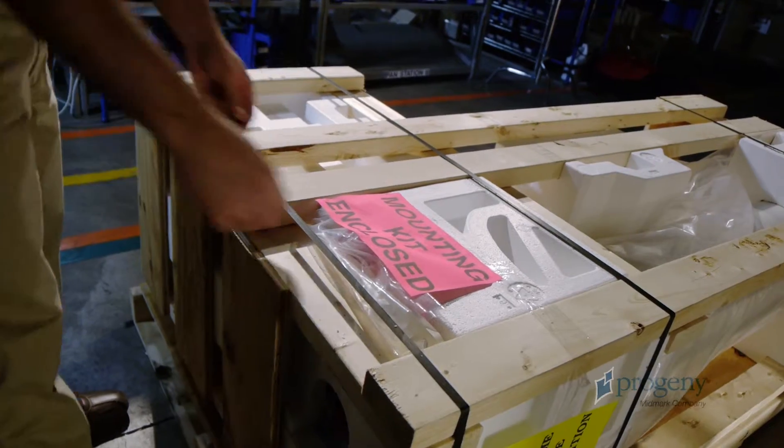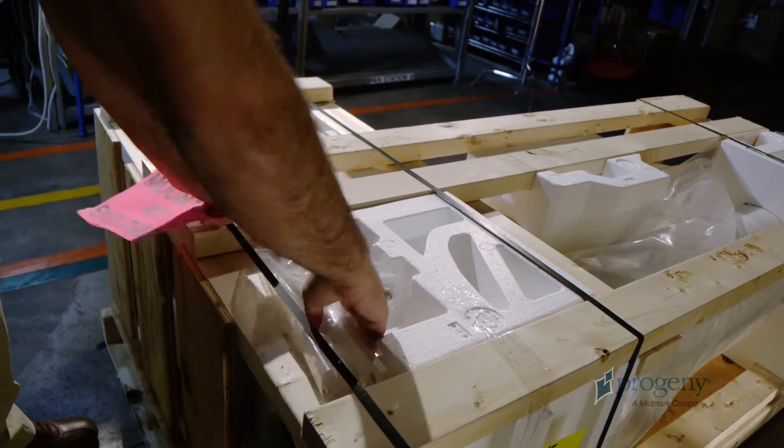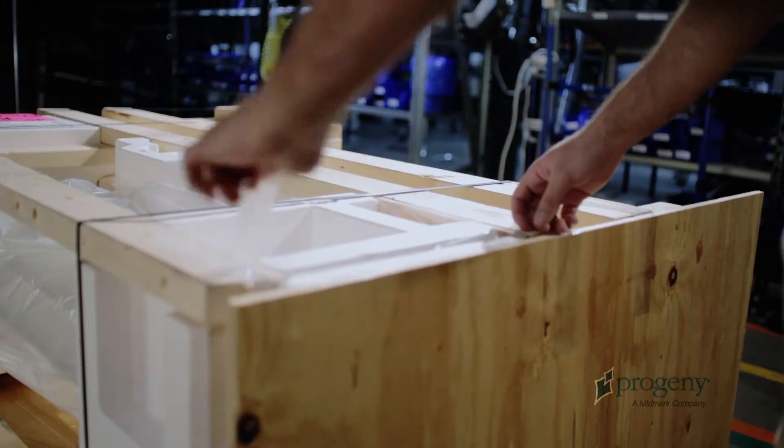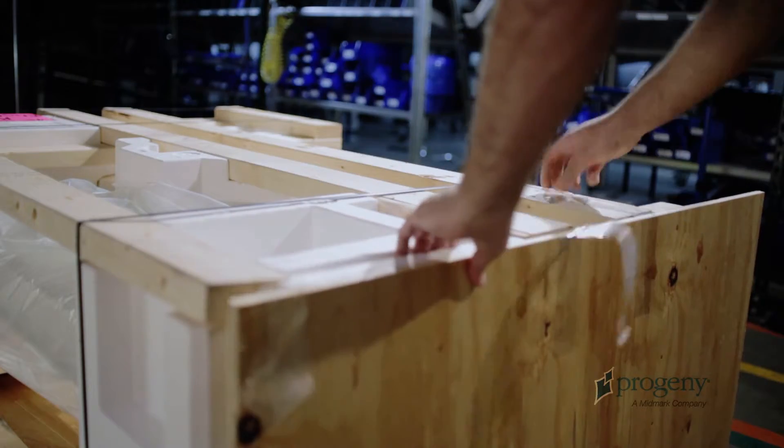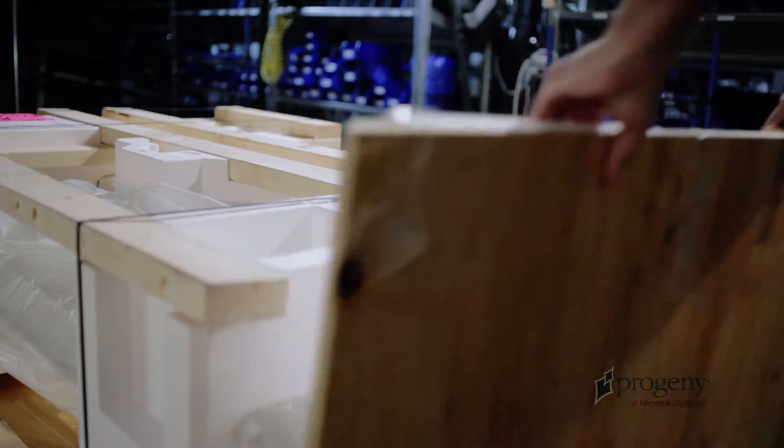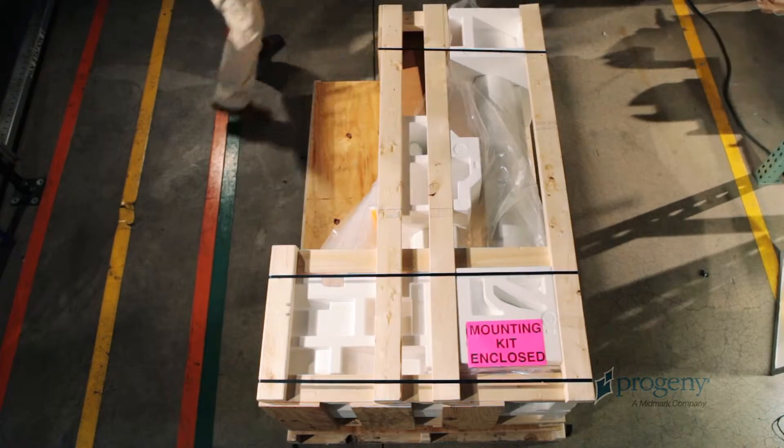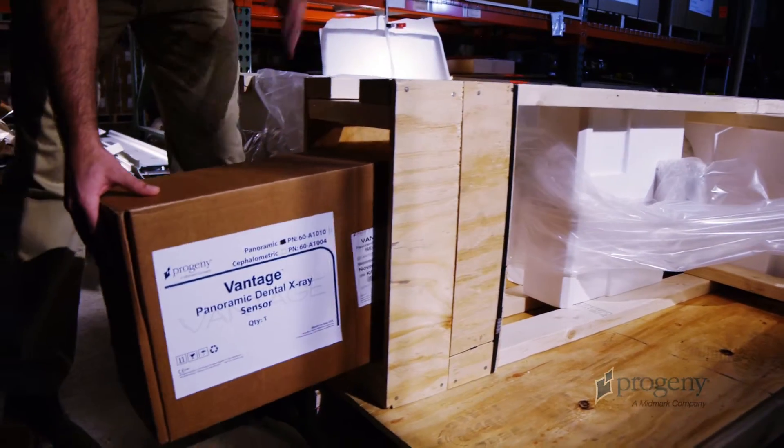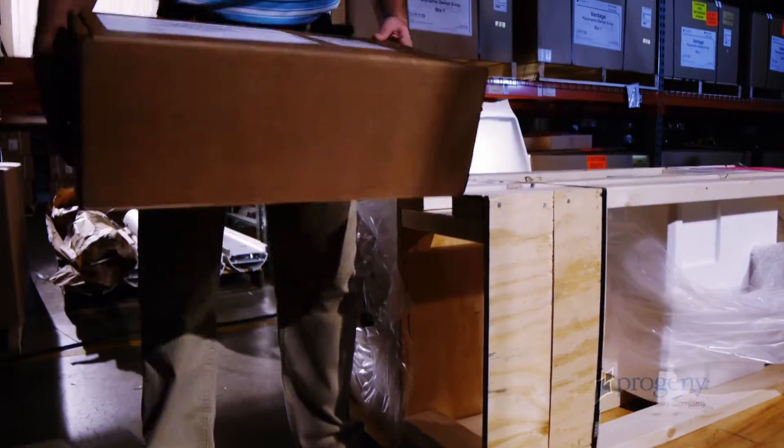The complete contents of the Vantage are now visible. Begin by removing the wall mount kit. Next, remove the plywood panel at the bottom of the assembly. Continue removing the rest of the inner boxes from the crate. Be sure to take special care of the panoramic sensor when moving.